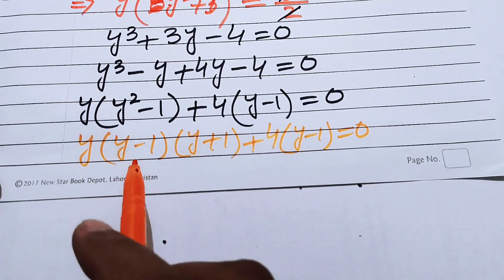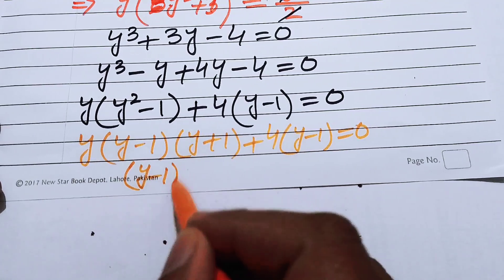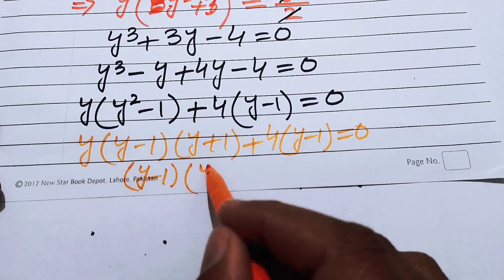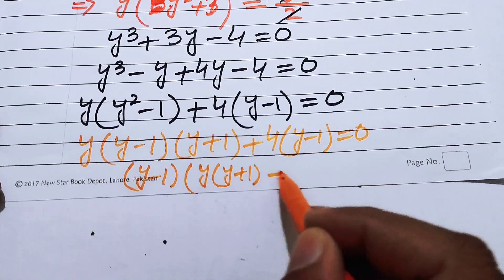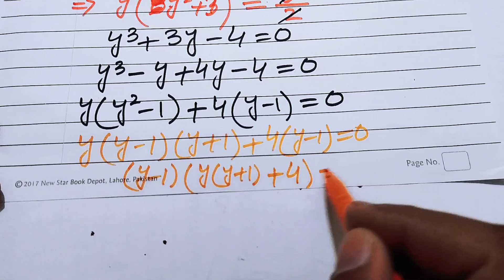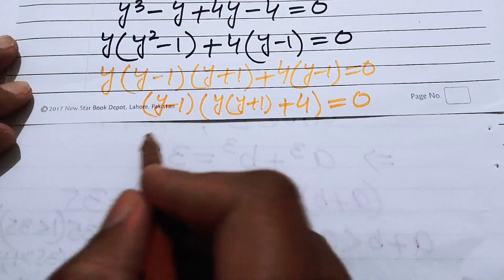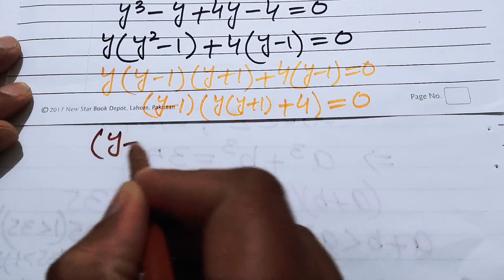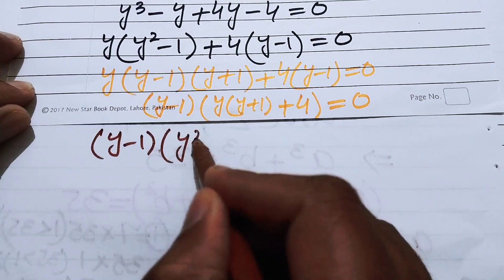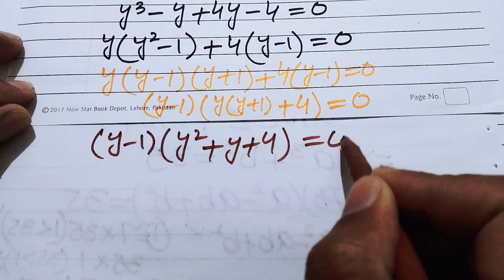We factor out the common term (y−1), giving (y−1)(y(y+1)+4) = 0, which simplifies to (y−1)(y²+y+4) = 0.